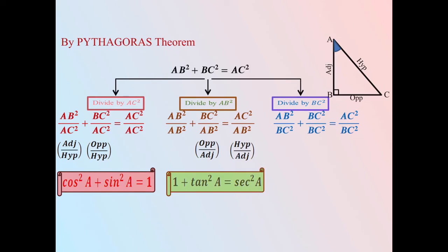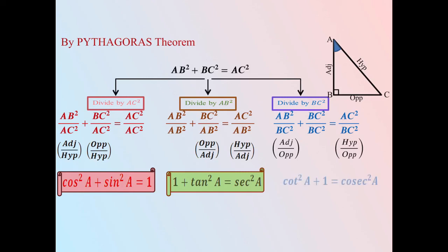Similarly, in the third case, AB / BC is the ratio of the adjacent side to the opposite side, and AC / BC is the ratio of the hypotenuse to the opposite side. This gives our third trigonometric identity: cot²A + 1 = cosec²A.